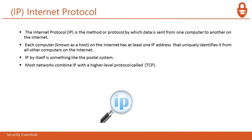Next is IP — Internet Protocol. The Internet Protocol is a method or protocol by which data is sent from one computer to another on the internet. Whenever we are on the internet, we have an IP address — without an IP address, we cannot communicate. Each computer, known as a host on the internet, has at least one IP address that uniquely identifies it from all others. That unique identification ensures you don't receive another system's data and that data reaches the correct machine.